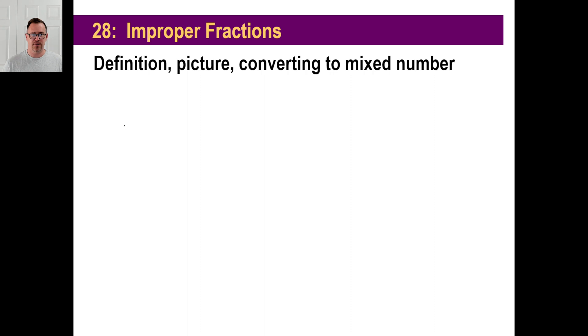Improper fractions, basically, are when the numerator is larger than the denominator. And don't forget, every fraction is a division problem. So when you see eight thirds, you can just think, that's eight divided by three. How many times does three go into eight? We'll talk about that in a second.